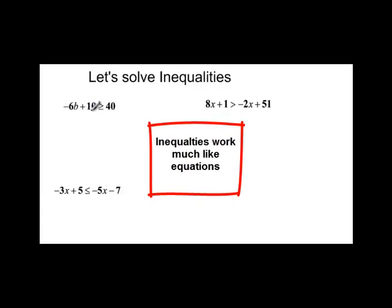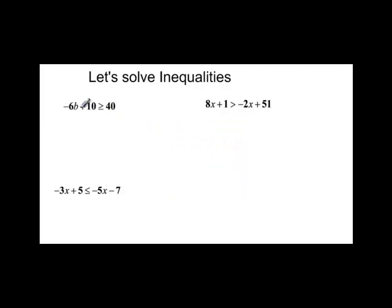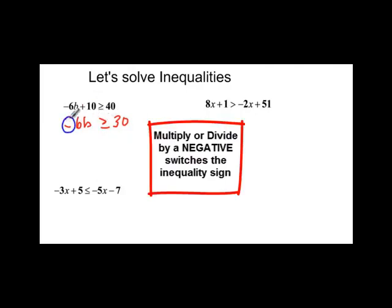So here we have 10 that I can take to the other side so that I'll have my variable, negative 6b term, on one side and my constant, which is now 30, on the other side. Now notice, in this very first example, I purposely gave you a negative coefficient so that you would remember that we're going to have to switch the inequality.